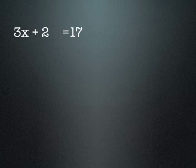The first thing we have to undo is the plus 2. So what we can do is do a minus 2, the opposite of plus 2. Because we've done the minus 2 on the left-hand side of the equal sign, we have to do the same thing on the right-hand side. So we have minus 2 on both sides of the equation. Now the 2 minus 2 cancels out, so the next line of our equation looks like 3x equals 15.